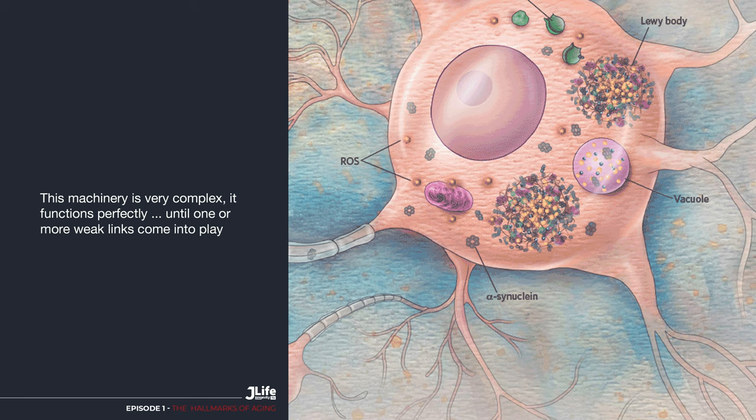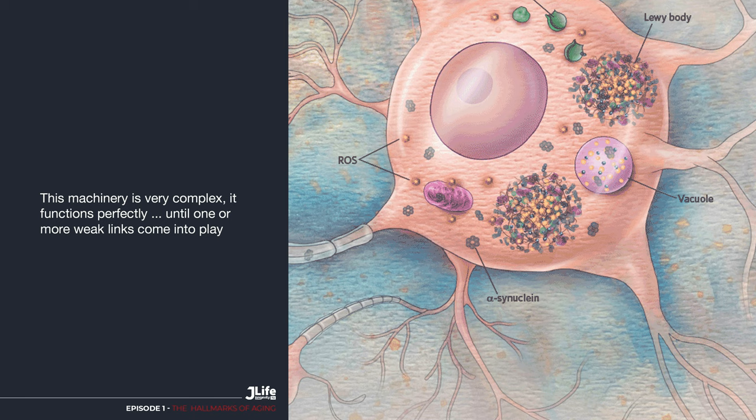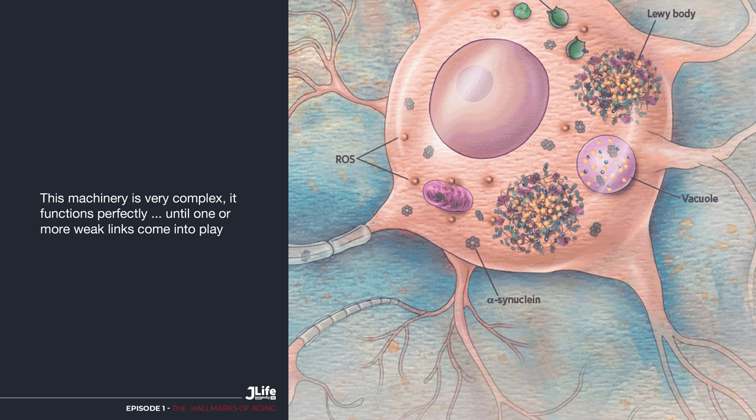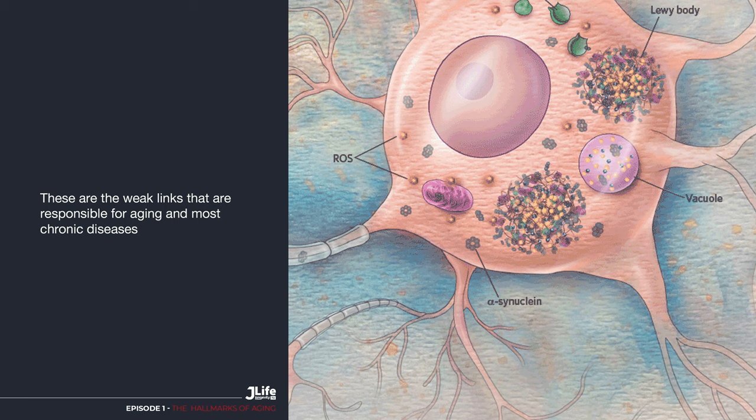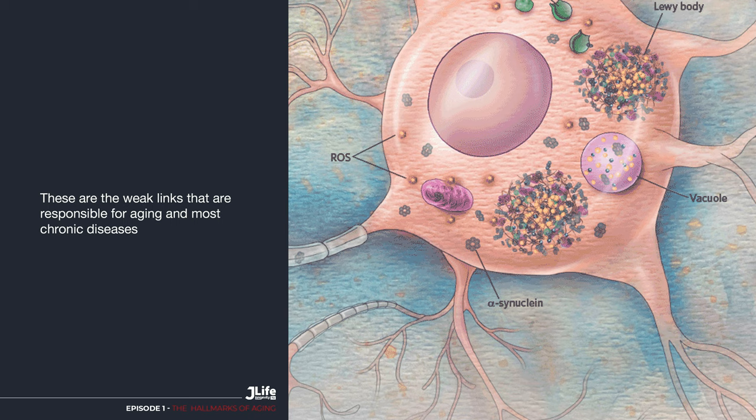All this machinery is of an unimaginable complexity, and yet it works perfectly every day — until one or more weak links make the machine seize up. These are the weak links that are responsible for aging and most chronic diseases, and that we will see now.